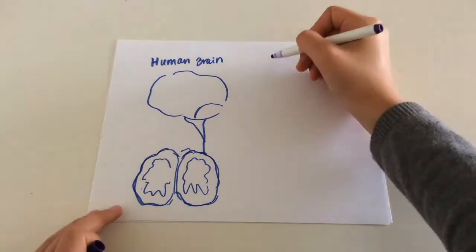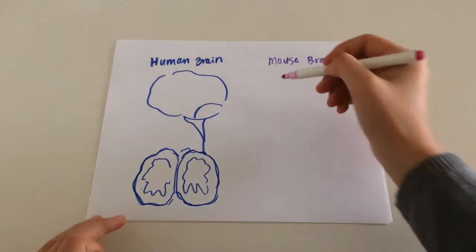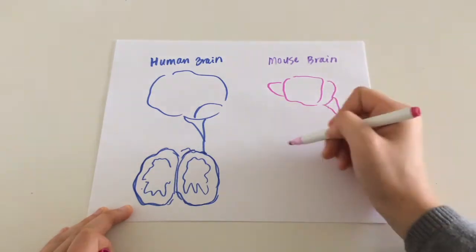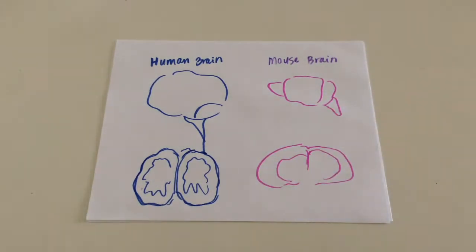Neuroscience research tends to use animals like mice to study the brain's anatomy and physiology, since it turned out that mice brains share quite a few similarities with human brains.